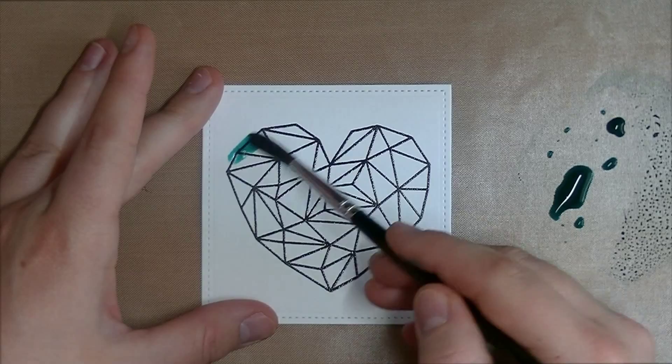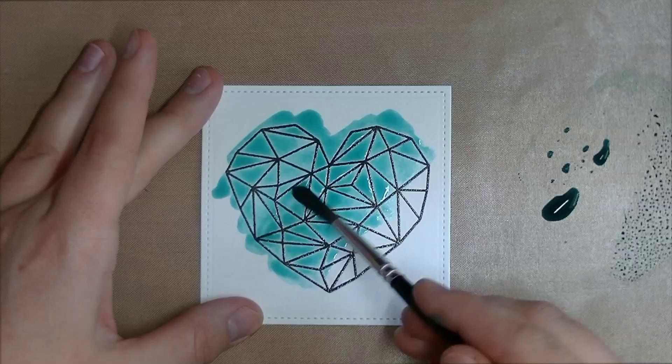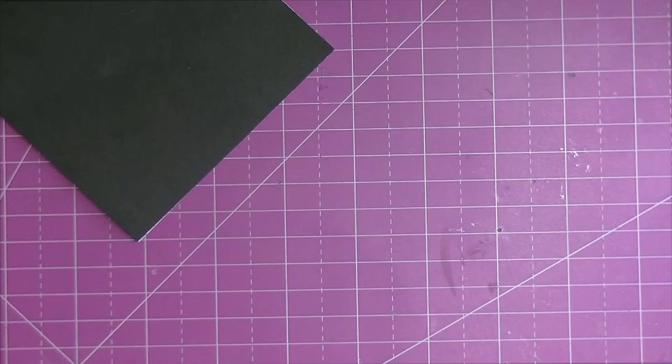Next I took some Peacock Feathers Distress Ink, smooshed that on my craft mat, brought in some water with my paint brush and just messily applied that onto the heart.